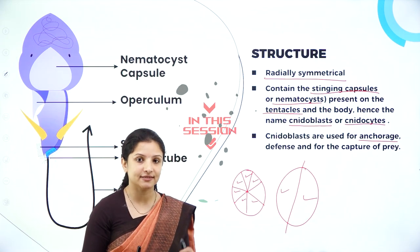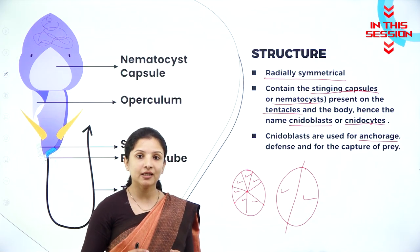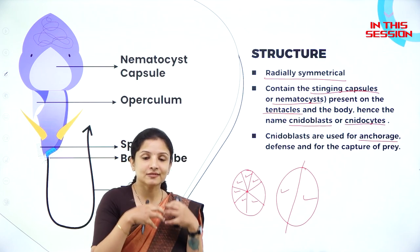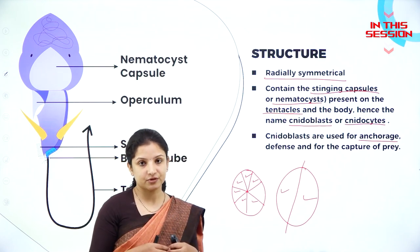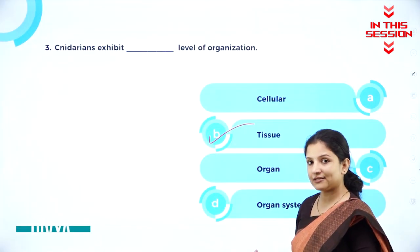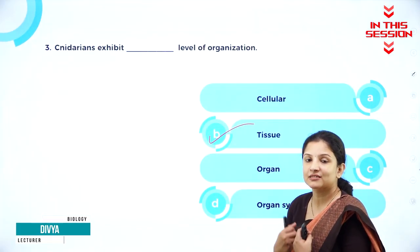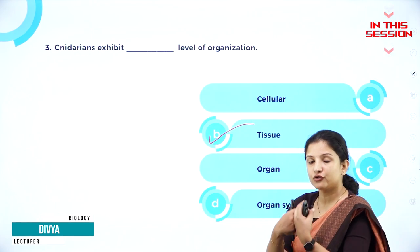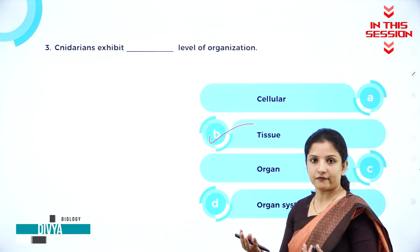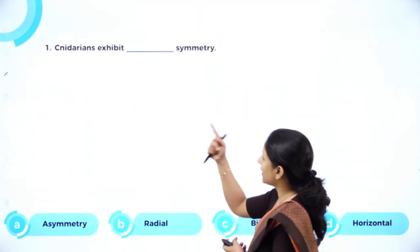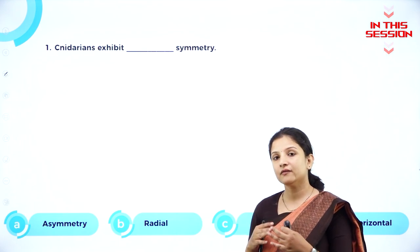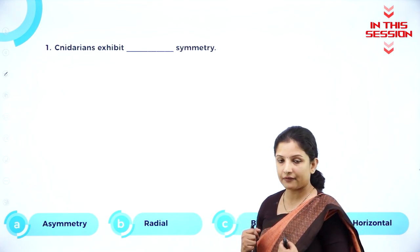Some of the nidarians are sessile, meaning they are not capable of moving from one place to another. They stick to or root themselves to a particular substratum. Their tentacles are a group of cells coming together to form a tissue which performs a particular function, such as capturing prey. Nidarians exhibit radial symmetry, meaning you can divide the body into two different halves.